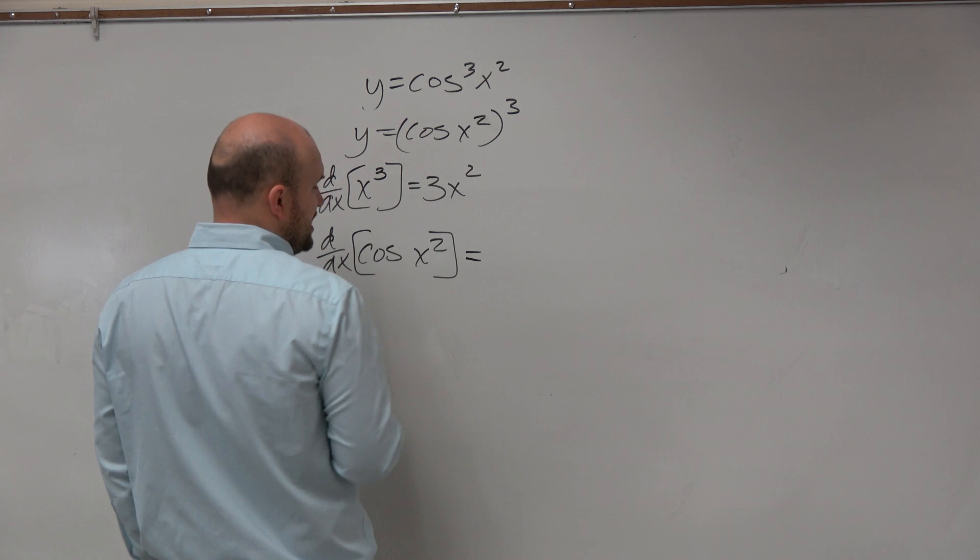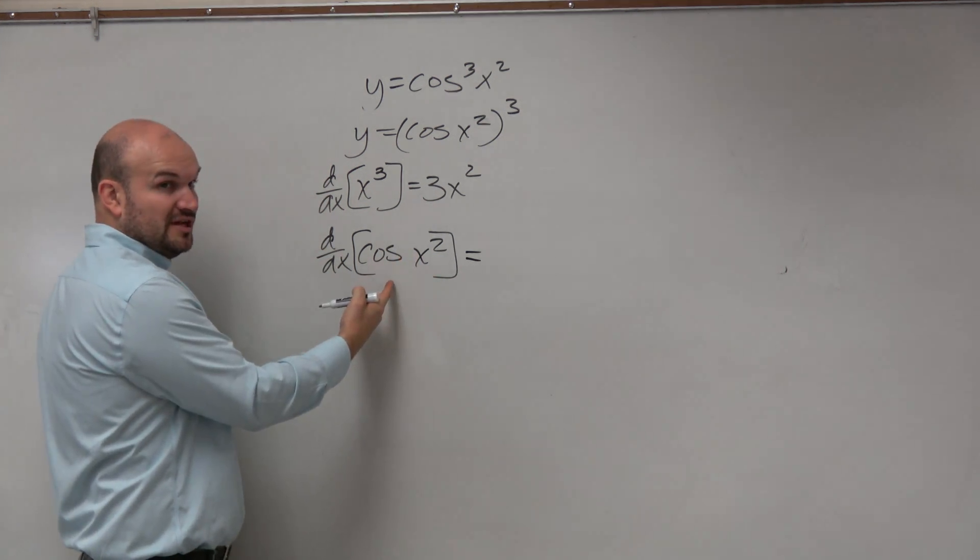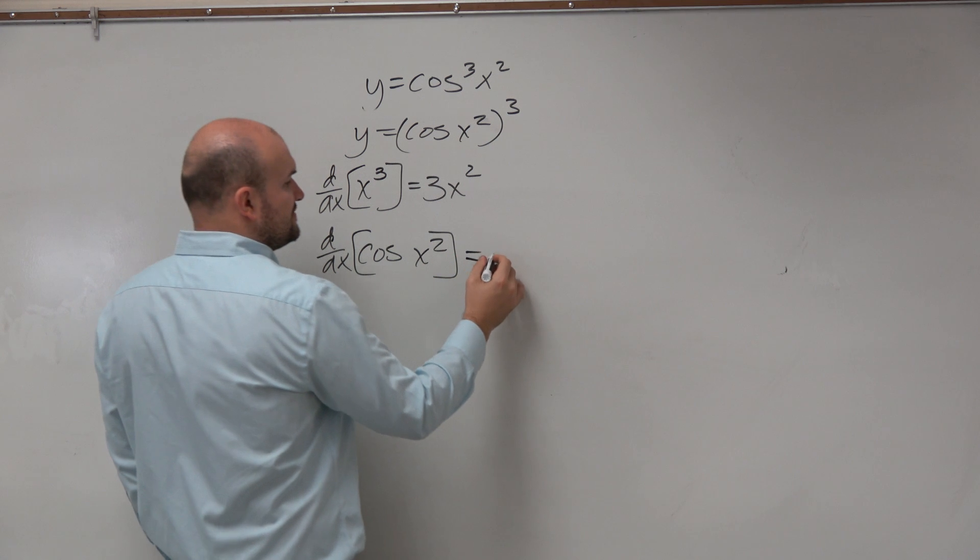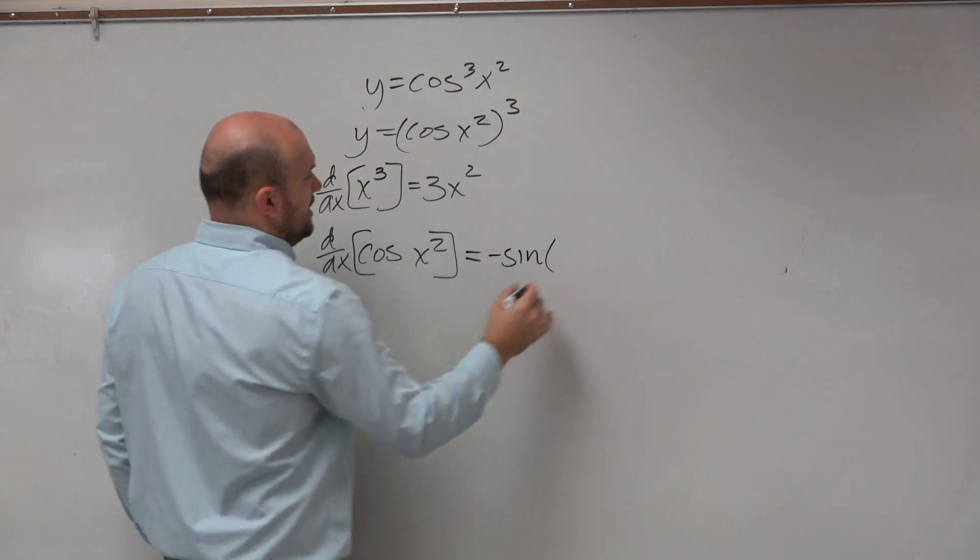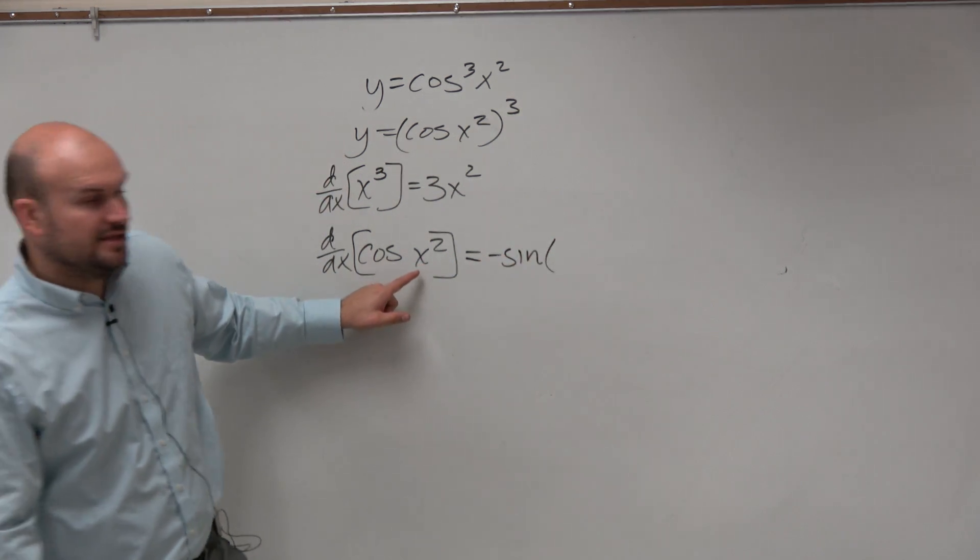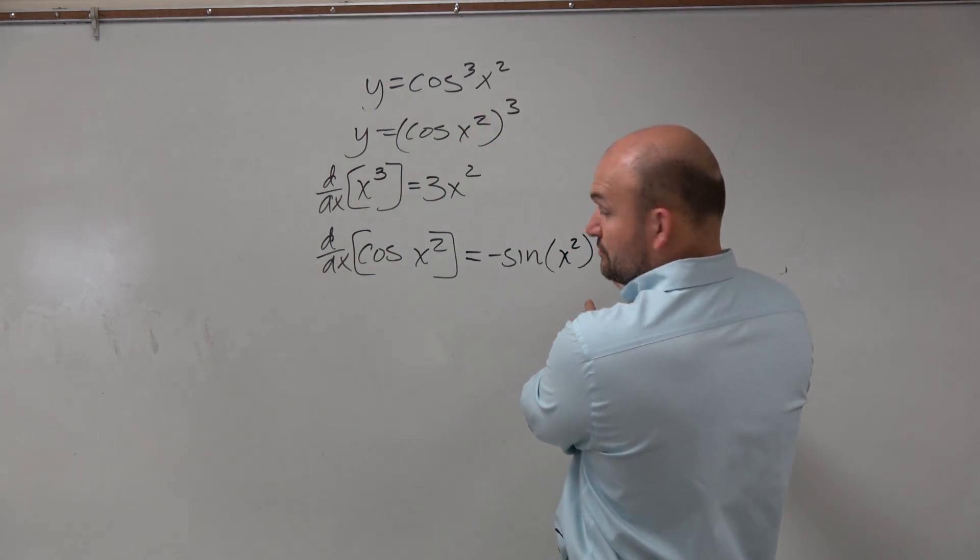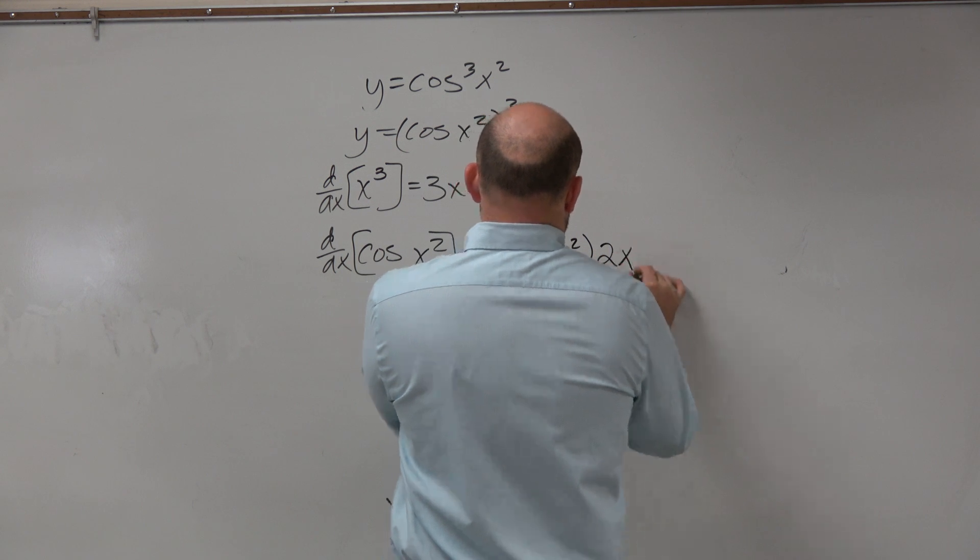So if we're going to do chain rule, we have to take the derivative of cosine, which we know is negative, has to be negative, negative sine. And then we have to plug in the child, which is x squared, and then multiply that by the derivative of x squared, which is 2x.